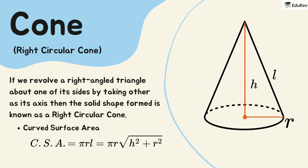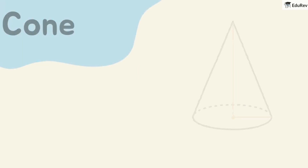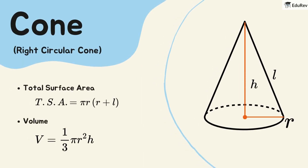Next, we have the cone. A right circular cone is formed by revolving a right-angled triangle around one of its sides, with the other side as the axis. The curved surface area of a cone is pi times the radius times the slant height. The total surface area of a cone is pi times the radius times the sum of the radius and the slant height.